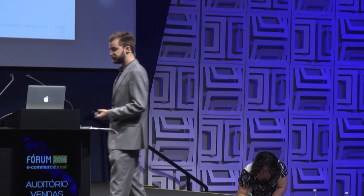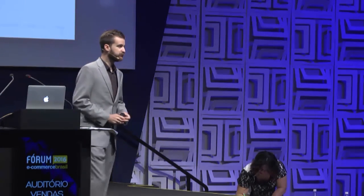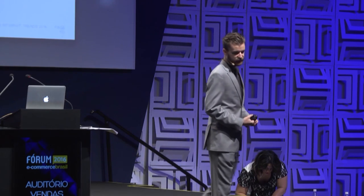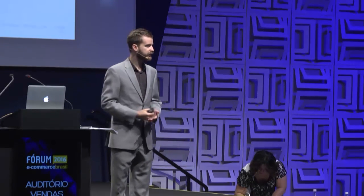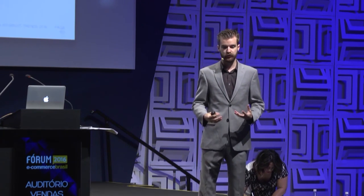We're seeing that the devices we use are also changing along with the mediums we use. For the first time in the last 10 or so years, smartphone sales have declined. We always saw it was going up and to the right, but this year the growth slowed by a slight margin. And then weirdly, on the other end, we're seeing new products like the voice-based Amazon Echo growing.